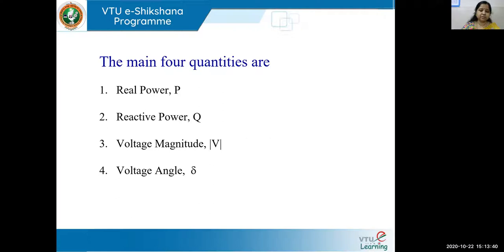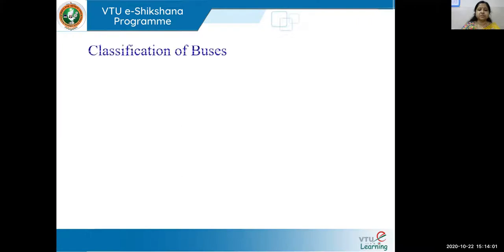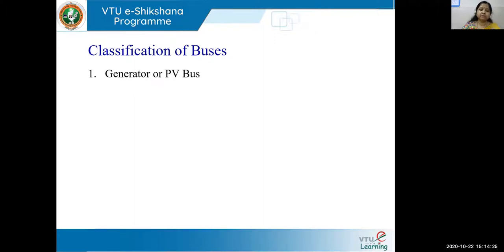Based on these four parameters we define the number of buses. In every bus, out of these four parameters, two values will be known and two will be unknown. In the power system there are mainly two types of buses: the generator bus and the load bus. The third type, which comes due to necessity to compensate losses, is called the slack bus, swing bus, or reference bus. The first bus is the generator bus, also called the PV bus.